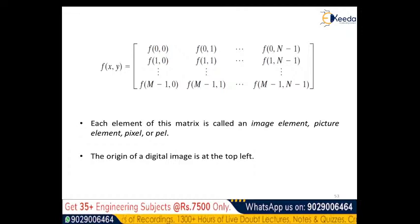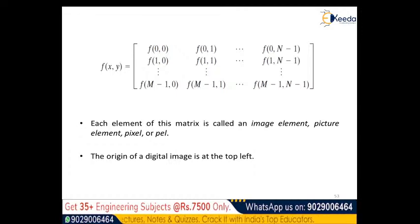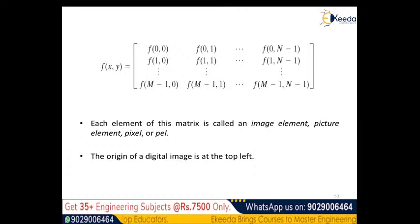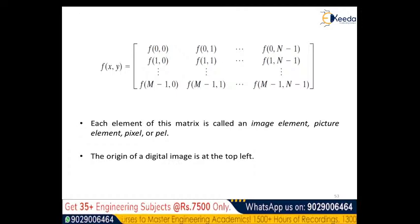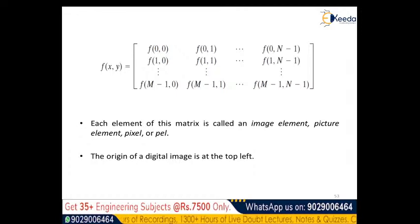This concludes the session on image formation and representation. The key focus was on the structure of the human eye, how images are formed, and how digital images are mathematically represented. Further image processing operations, including pixel relationships, will be covered in the next sessions.